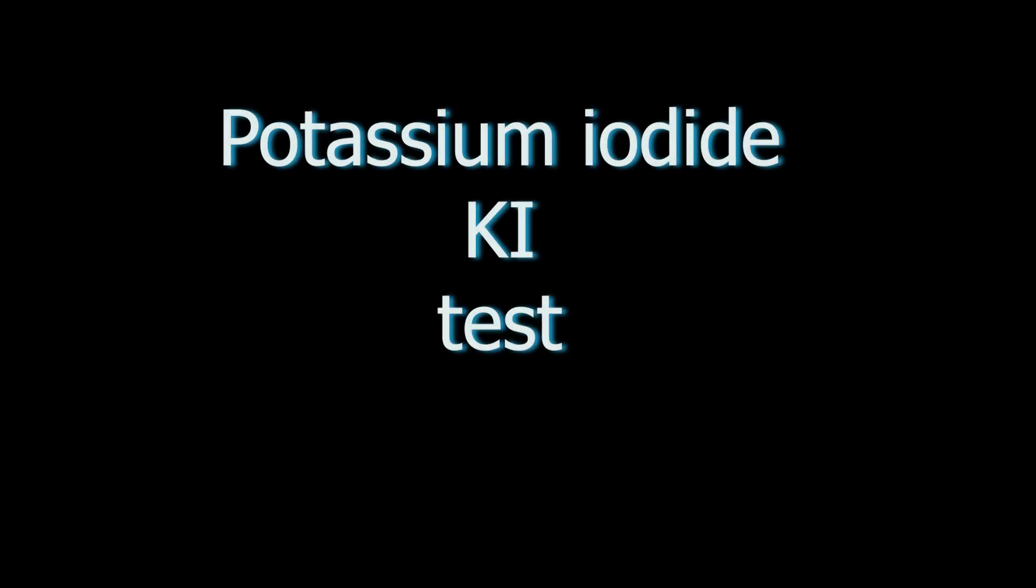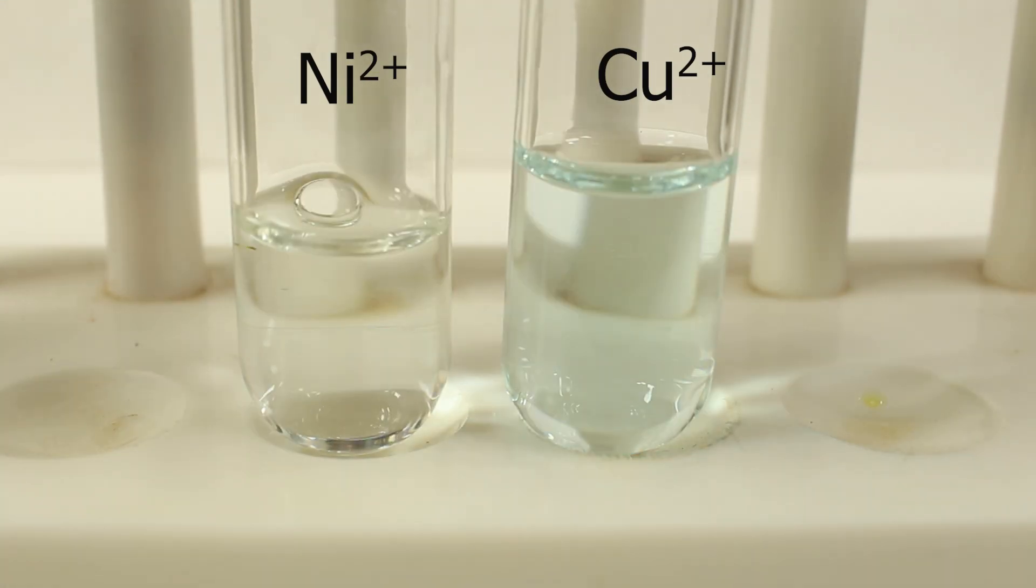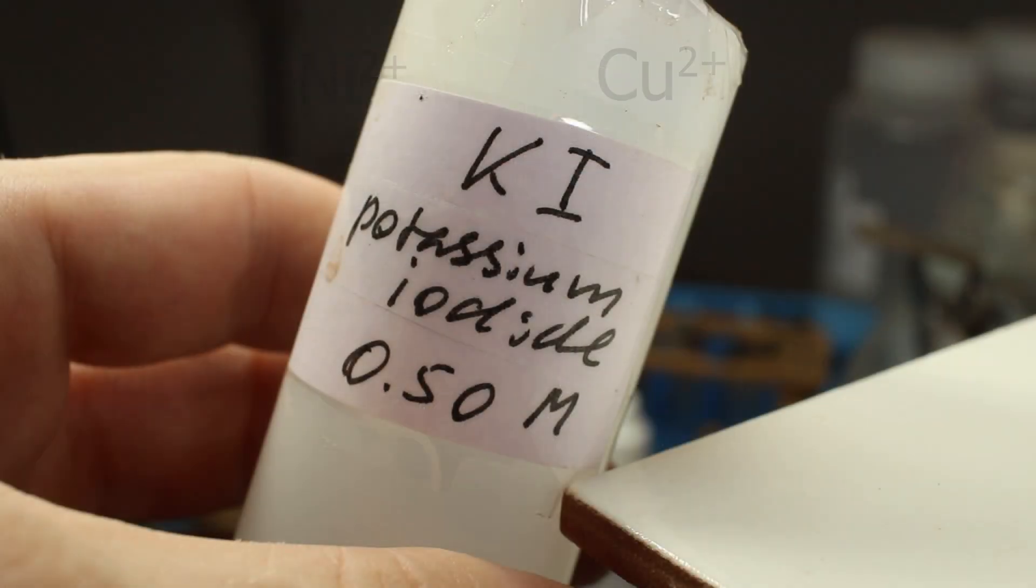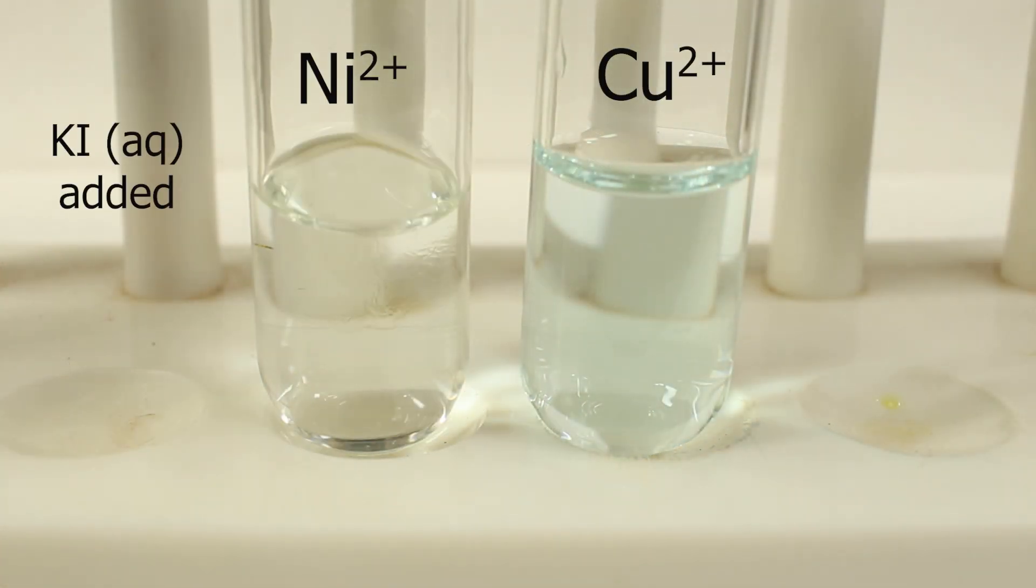Another test, potassium iodide. Here we use the ability of copper II ions to oxidize other substances. Copper II is not very strong oxidizing agent but it's stronger than nickel II for example. Potassium iodide added to nickel, nothing visibly happens.